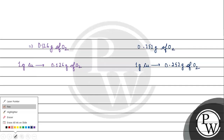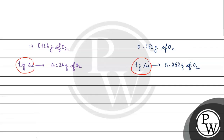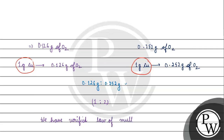Now, with a fixed mass of copper, we combine different masses of oxygen. We find the ratio of these oxygen masses: 0.127 to 0.252, which simplifies to approximately 1 is to 2 — a simple whole number ratio. This confirms the results agree with the law of multiple proportion. Thank you. All the best.